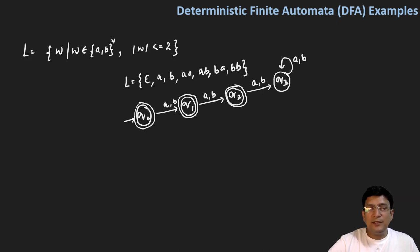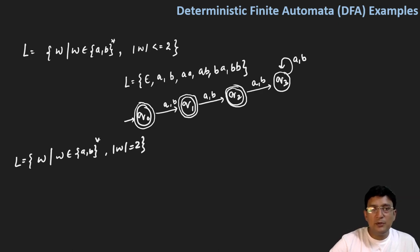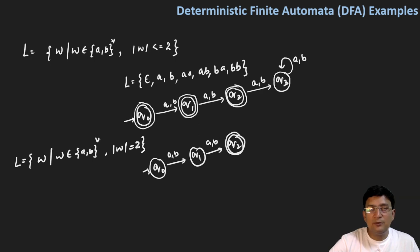This suggests that we have already designed the automata for the language where w is an element of {A,B}* and the length of w is exactly two. So if the length of w is two, q0 is the start state; on A and B you move to q1, on A and B again you move to q2, which is the final state, and then on A and B you come to the dead state q3 and stay there.